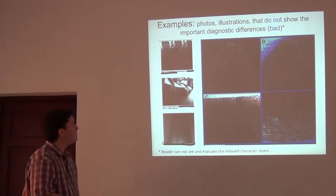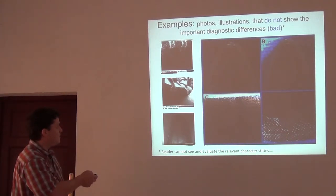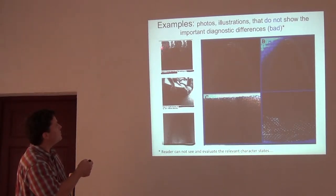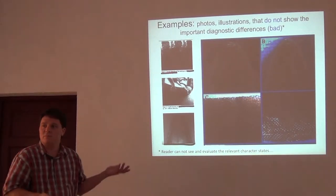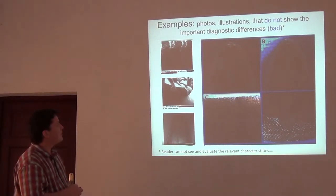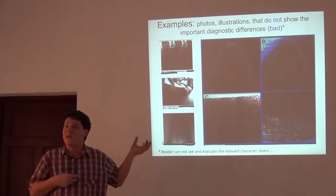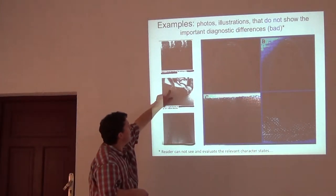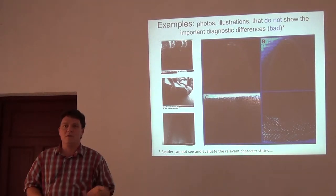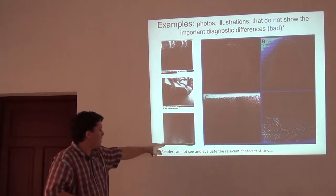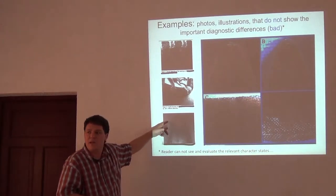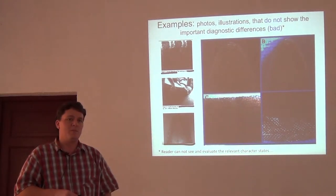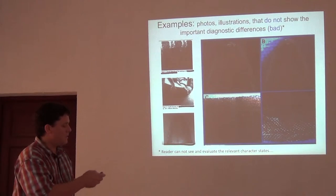What I don't like are descriptions like this — these are figures taken from papers published last year, with the species name and author crossed off. This one says 'dorsal tubercles of the holotype' — I can see some tubercles but on one side of the body I can't see anything, so I can't count them. If those are diagnostic characters, as the reader I can't assess them because the photography is so bad. Here's one that says 'caudal dorsum without tubercles' — but I can actually see some tubercles on it, so it doesn't make sense. And here, the ventral scales of the chin of the gecko — I can't see anything. Figures that don't show the diagnostic character states aren't helpful, and in my mind that paper should have been rejected.